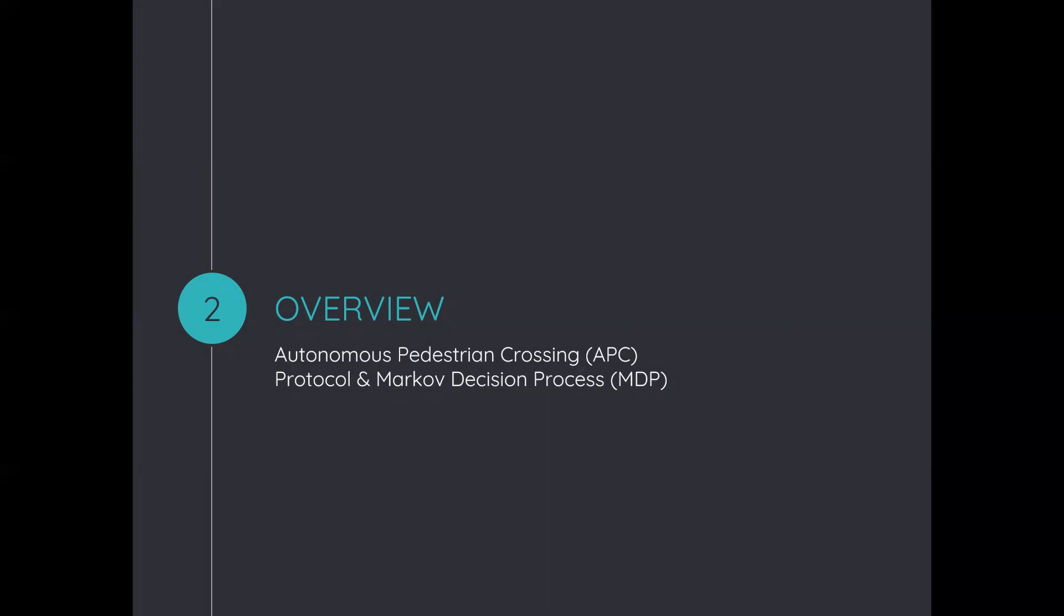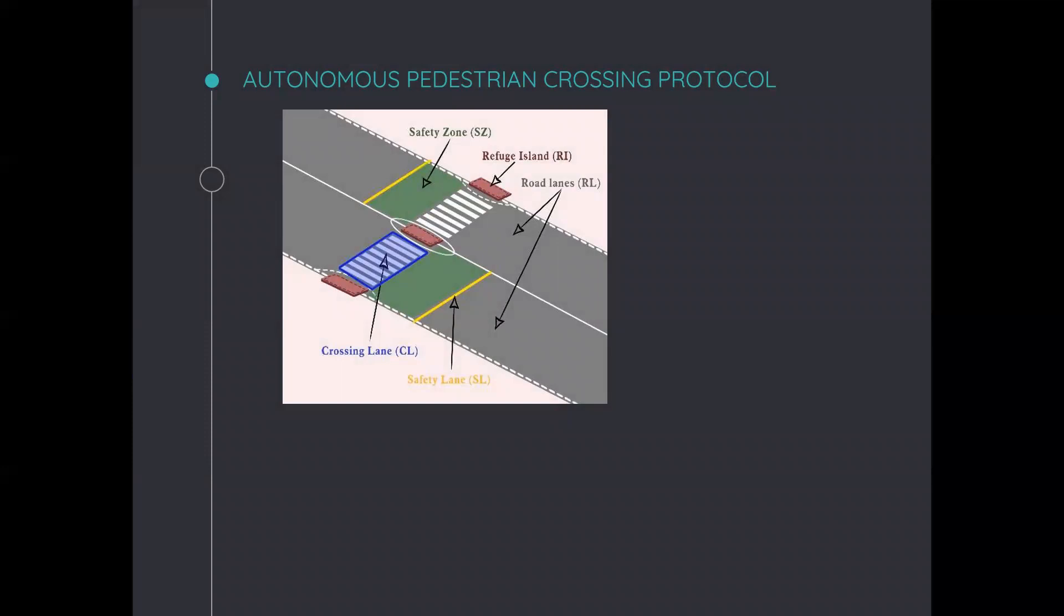We'll see now an overview of autonomous pedestrian crossing protocol and the Markov Decision Process. So, autonomous pedestrian crossing protocol considers the road and the crossing lane by lane, so that both pedestrians and vehicles can consider one part of the crossing, which is the crossing lane. And APC undertakes also a safety zone to protect pedestrians in case of an emergency braking.